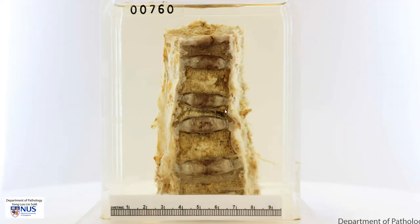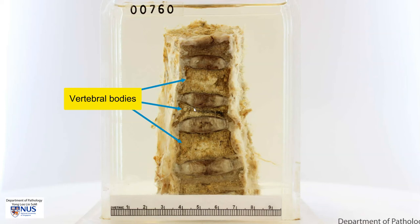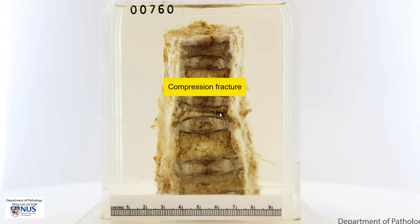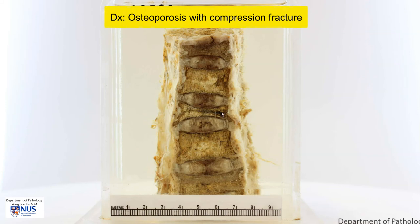If we look closely, we can see that the most obvious abnormality is that the vertebral bodies are of differing heights. In particular, this vertebral body has a biconcave shape and it is markedly compressed compared to the adjacent vertebral bodies. We can also just about make out a fracture line here horizontally, so there is a compression fracture of this vertebral body. The bony trabeculae also appear a little bit more spongy than usual. The diagnosis here is osteoporosis with compression fracture.